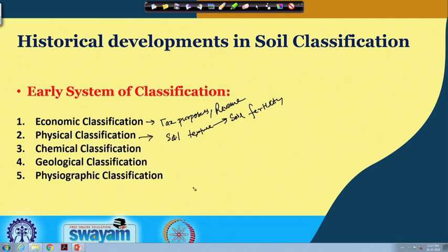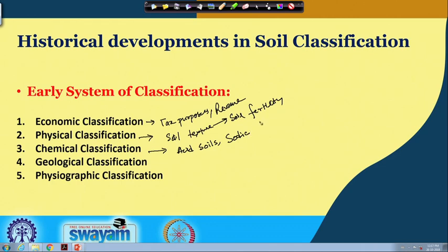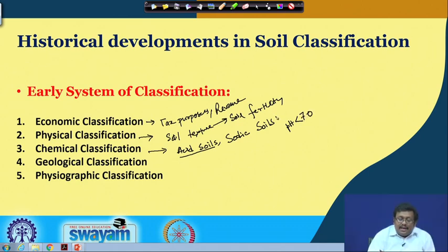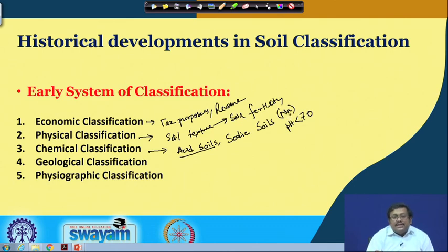Chemical classification was based on the fact that soil can be divided into groups based on their chemical characteristics, such as acid soils and sodic soils. Acidic soils are those with a pH value of less than 7, whereas sodic soils are those having a high concentration of sodium ions. Both of them are problematic soils, which we will discuss in detail later on.